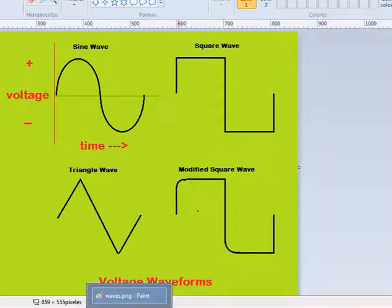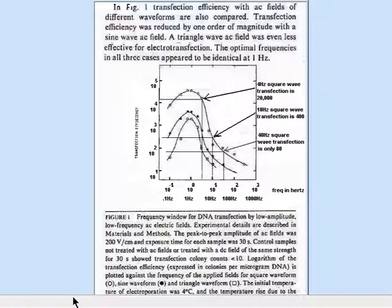So what this all boils down to is how much transfection it causes. This graph is very useful because it shows the effects of a square wave, a sine wave, and a triangle wave. The square wave causes the most transfection.